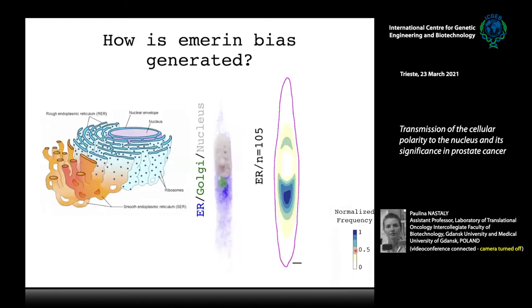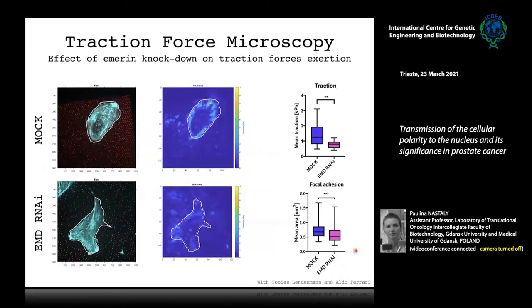This part told us that depleting the nuclear envelope protein emerin has effects on the whole functionality of the cell.